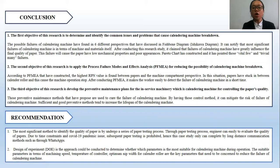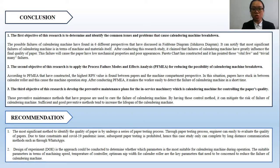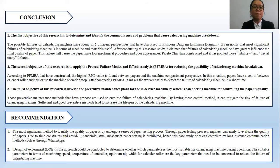Chapter 5: Conclusion and Recommendation. The possible failures of the calendering machine were found in terms of six different perspectives as identified in the Fishbone or Ishikawa diagram. It was noted that the most significant failures of the calendering machine are in terms of machine and material itself. By having the suggested control methods, the risk of failure of the calendering machine can be mitigated.